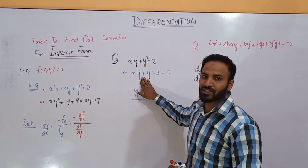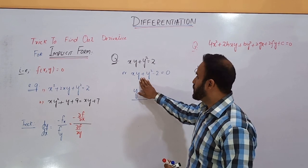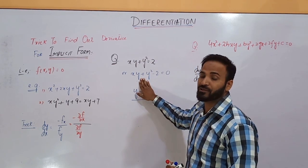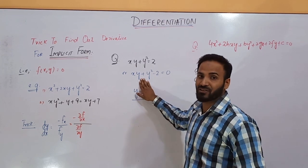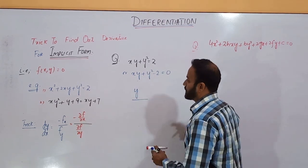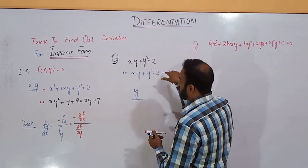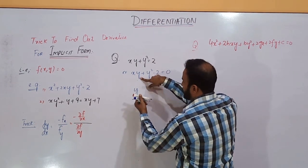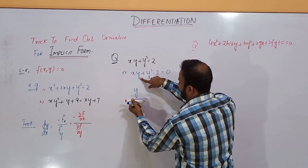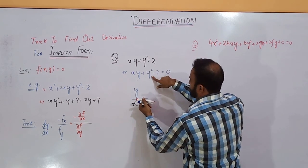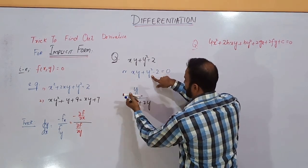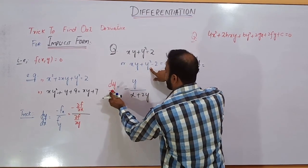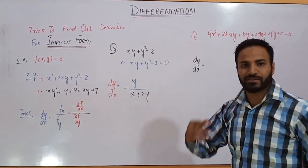Now, take the derivative of this equation with respect to y. When you take the derivative with respect to y, x will behave as a constant quantity. The derivative of this equation with respect to y gives x plus 2y, and the negative sign indicates dy over dx. This is your answer, students.